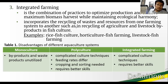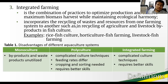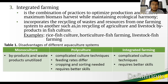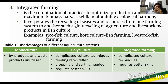Let us look at the disadvantages of each system. In Table 1, monoculture has the disadvantage of untapped or unutilized byproducts or wastes. In both polyculture and integrated farming, there is a need for training and experience, as culture techniques can be complicated and require skills to operate. In polyculture specifically, different species require different feeding rates, and there is a need for cropping and sorting during harvest.